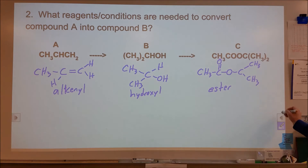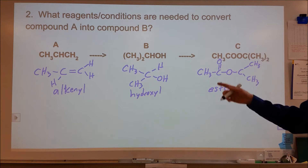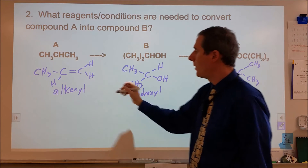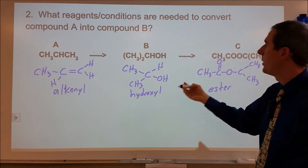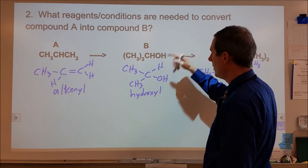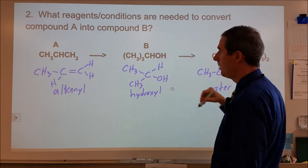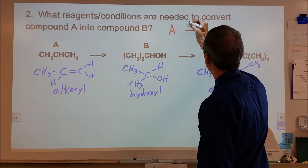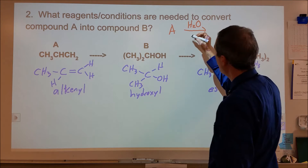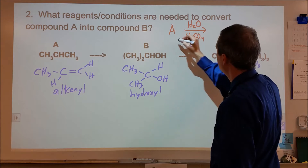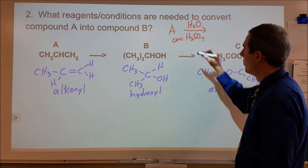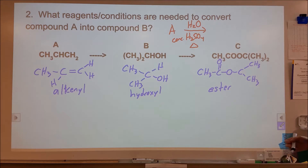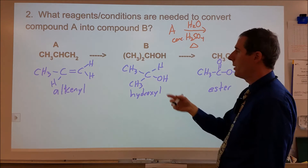The second question is: what reagents and conditions are needed to change compound A into compound B? Looking at compound A, we have an alkene, and we're turning it into an alcohol. To turn an alkene into an alcohol, we need to add water. So we're going to take compound A, add water, and it will need a catalyst — concentrated sulfuric acid. We're going to need to heat it, and maybe for a length of time, but that would be how we add an OH group to that chemical.